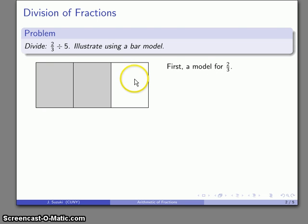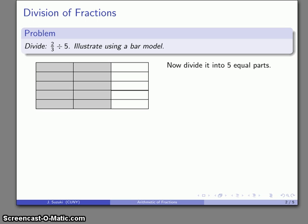We'll start with our model for two-thirds. We'll take a unit, divide it to three equal pieces. We'll take two of those equal pieces, so that's our model for two-thirds. We want to divide it by five, so that means that we want to divide this into five equal parts. So I'll do the division horizontally, and our division is to divide it into equal parts and then take one of those parts.